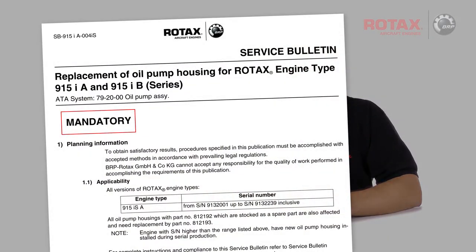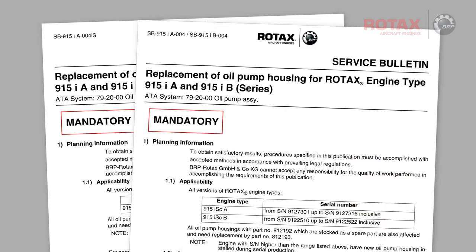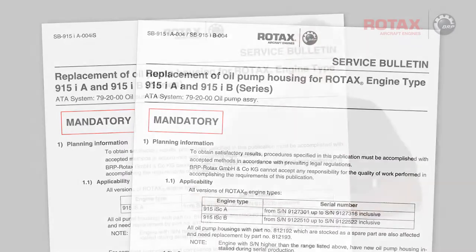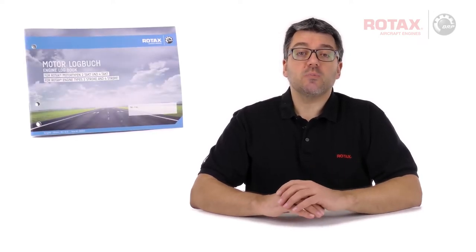Engines requiring oil pump housing replacement are listed in Service Bulletin Section 1.1 Applicability. If an engine is affected by serial number, consult the engine's logbook or maintenance documents to establish if this service bulletin has already been accomplished. Engines with serial numbers higher than those listed already have the new oil pump housing installed during production.